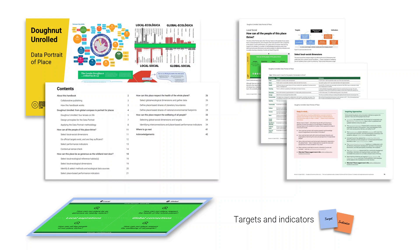The current version is a 40-odd page document available on Google Docs or as a PDF, published on the Donut Economics Action Lab platform.